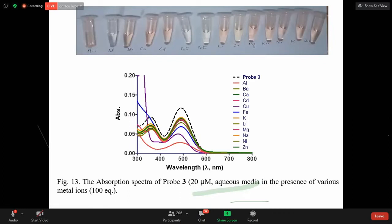Further it is confirmed with absorption spectroscopy. The black color shows probe 3, and the red color for aluminum with probe 3, and blue color for iron.